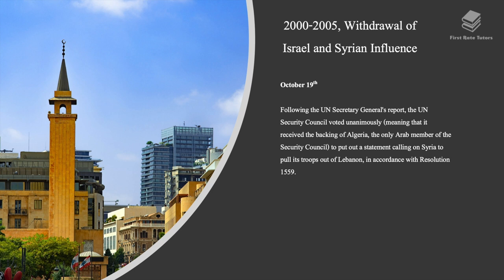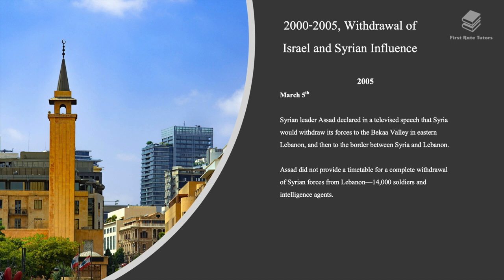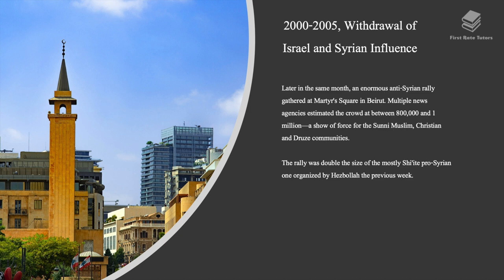On March 5th, Syrian leader Assad declared in a televised speech that Syria would withdraw its forces to the Bekaa Valley in eastern Lebanon, and then to the border between Syria and Lebanon. Assad did not provide a timetable for the complete withdrawal of Syrian forces — some 14,000 soldiers and intelligence agents. Later that month, an enormous anti-Syrian rally gathered at Martyrs Square in Beirut. Multiple news agencies estimated the crowd at between 800,000 and 1 million, representing the Sunni Muslim, Christian, and Druze communities, double the size of the mostly Shiite pro-Syrian rally organized by Hezbollah the previous week.